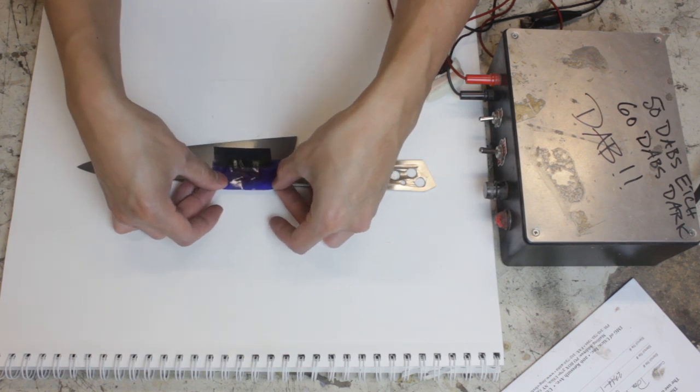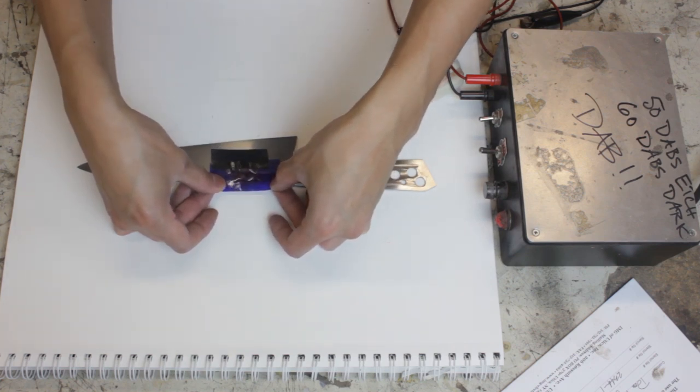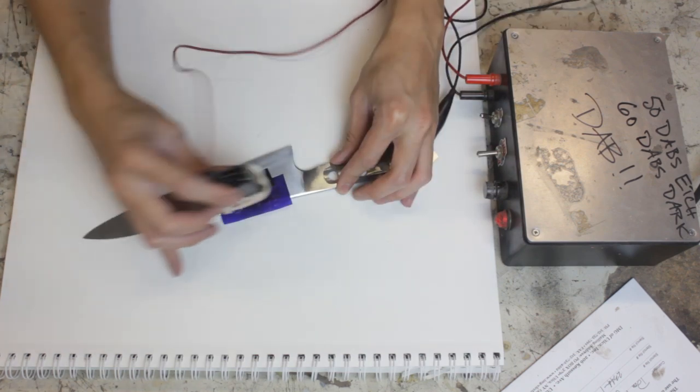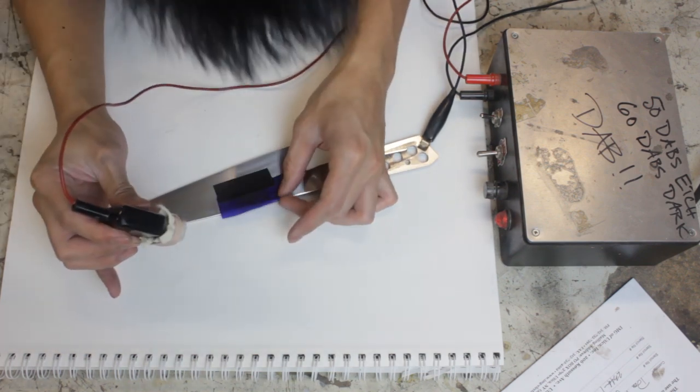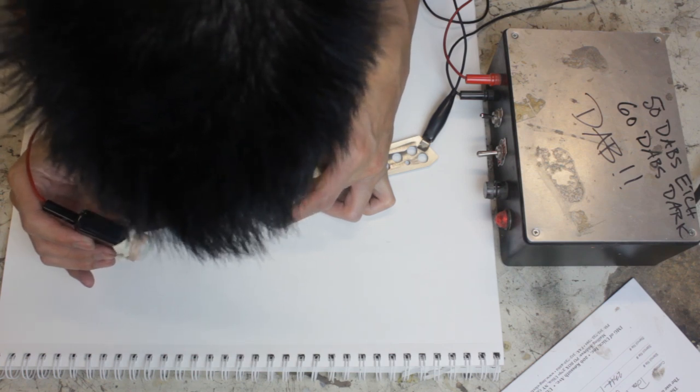Pretty straightforward. I use a stencil and this electro etcher I made a long time ago. It sends some electrons one way, the stencil does some things and then electricity eats away at the steel. Flip the polarity and now it darkens the signature. I check periodically to make sure it's marking evenly and to see if anything weird is happening.